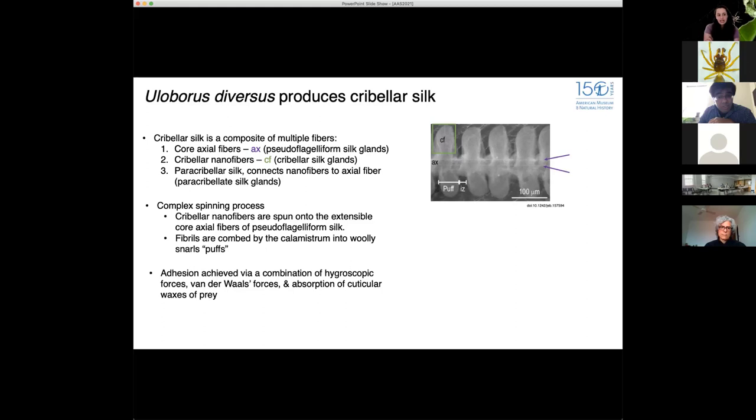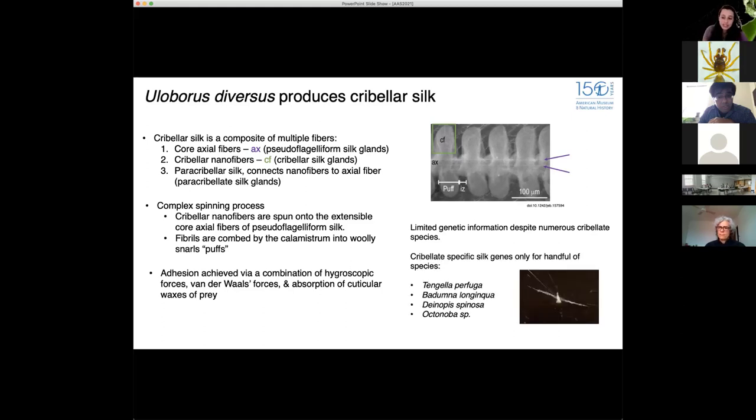Despite numerous cribellous species, we are barely grasping the surface of what their silk genetics are like. At least for cribellous-specific silk genes, we only have information from a handful of species, and those include species in Stegodyphus, Badumna, there's some information on Deinopis, and they've recently published on six species of Octonoba.